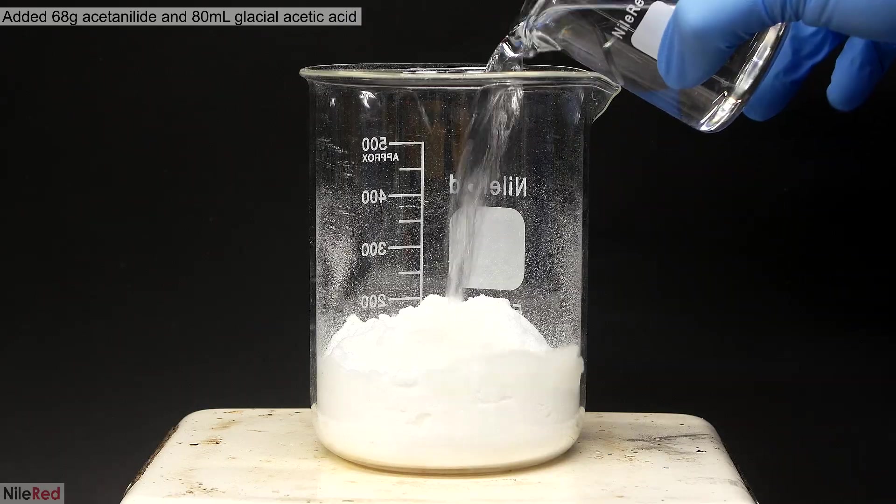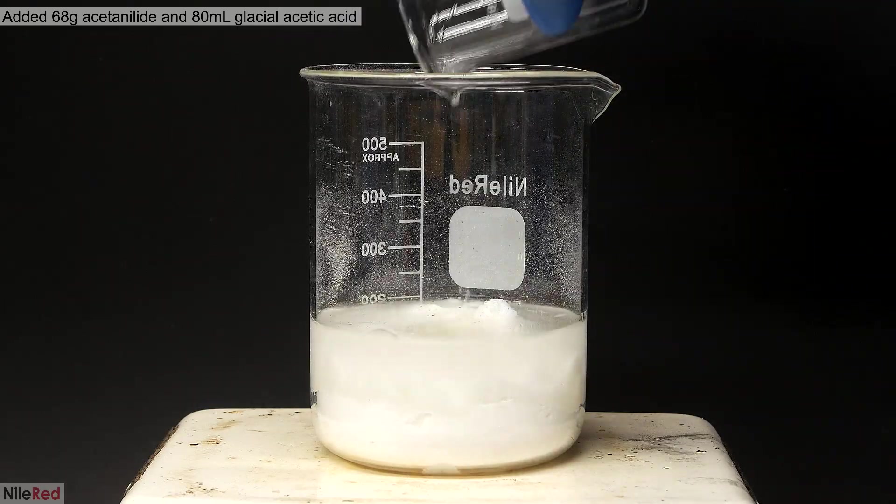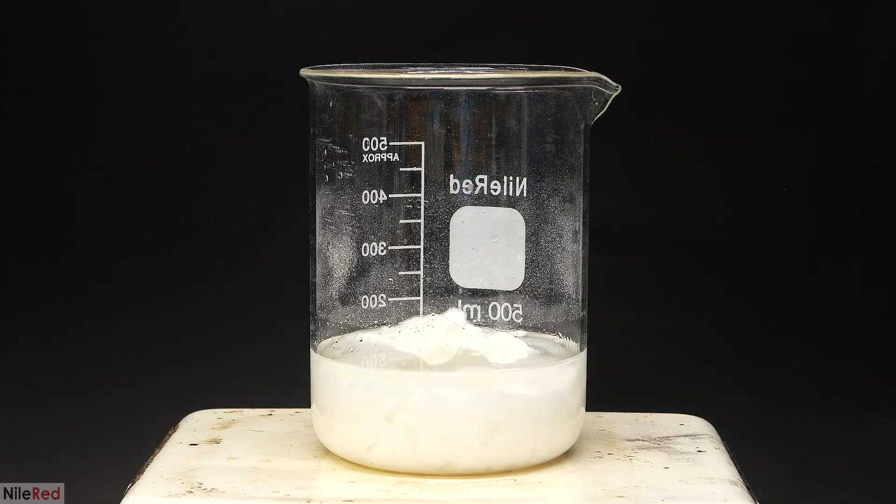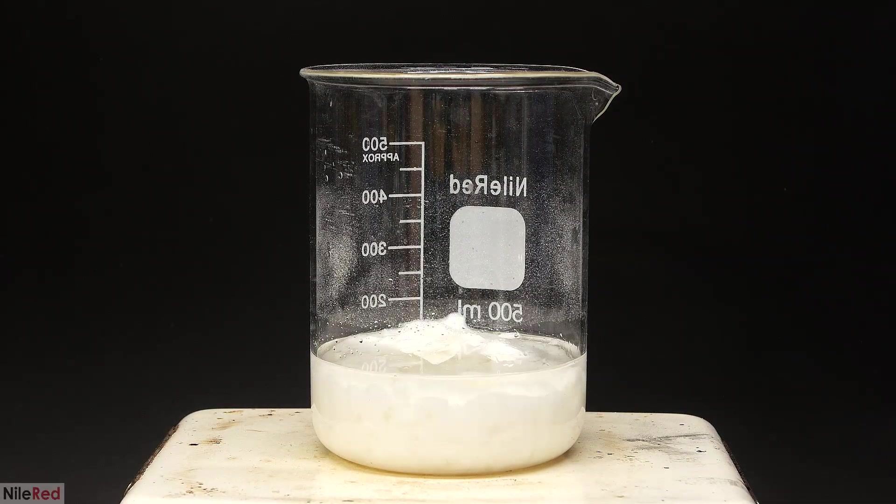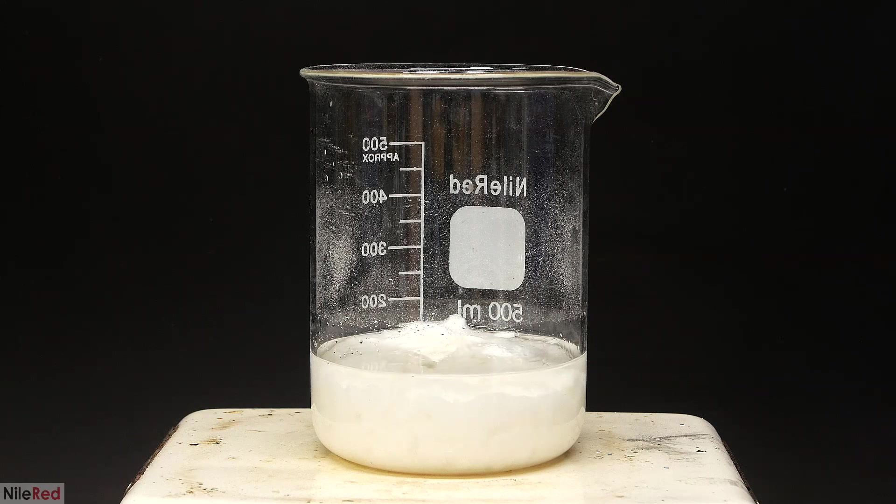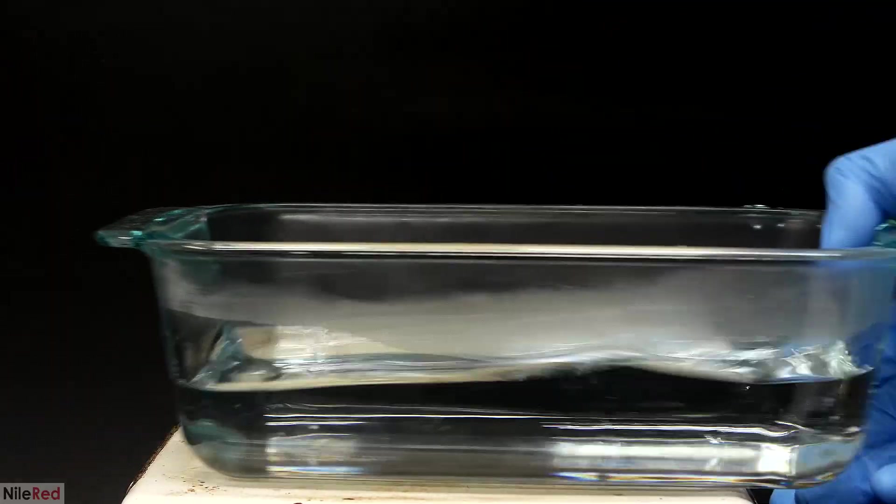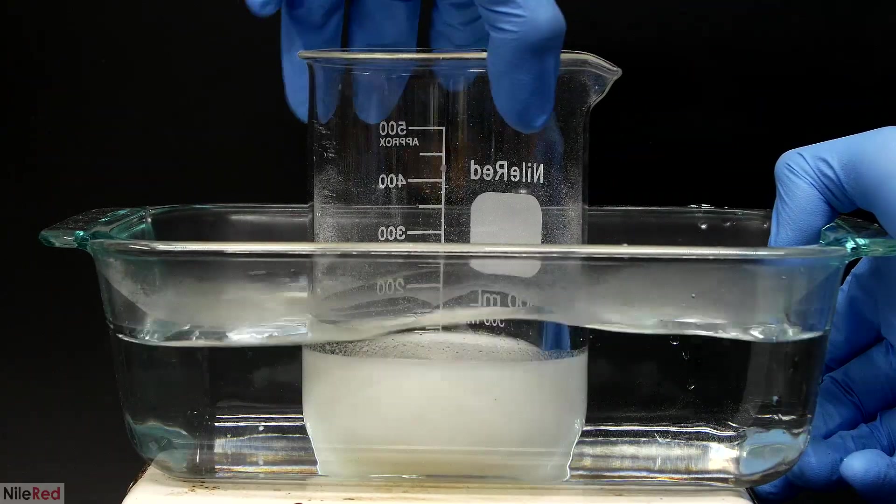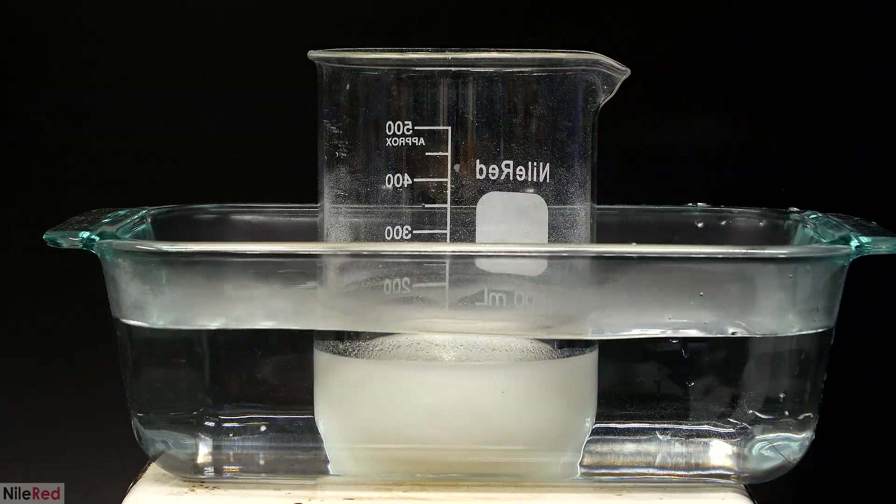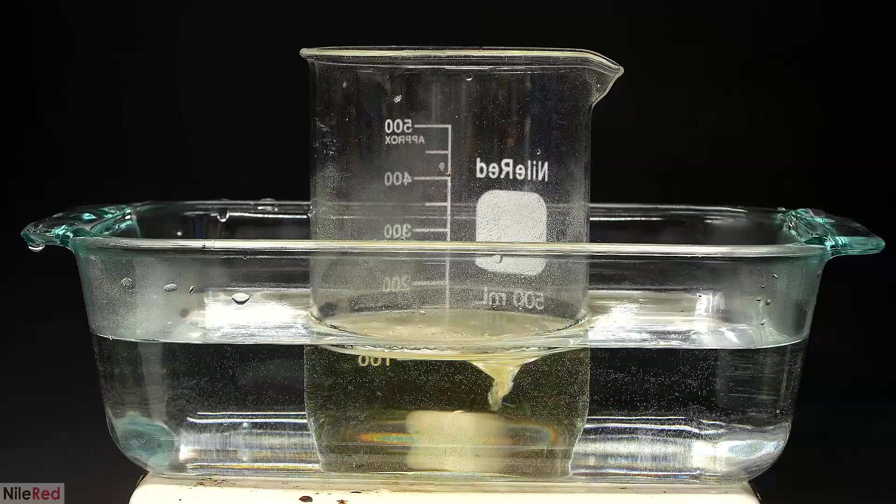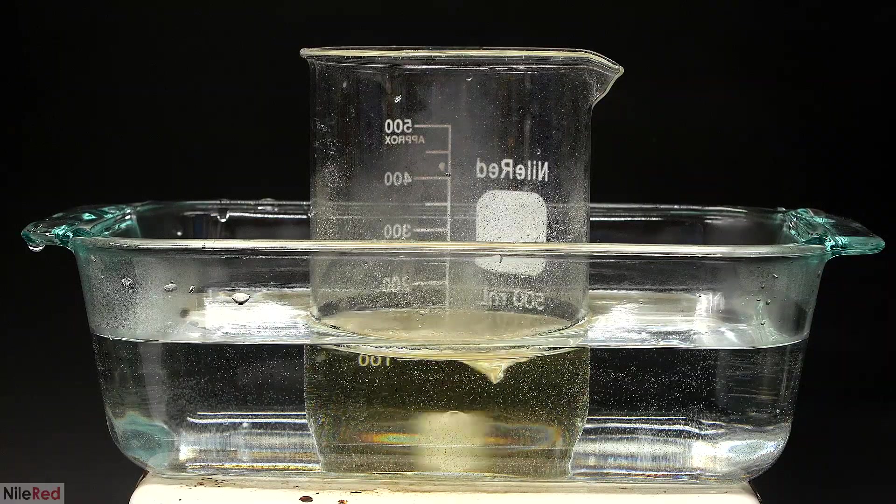To start things off, I dump the acetanilide into a beaker and I pour in some acetic acid. Then, on top of this, I drop in a magnetic stir bar. A small amount of the acetanilide dissolves, but most of it doesn't, so I'm gonna have to heat things up a little. I put everything into some hot water, I turn on the magnetic stirring, and I just wait. I had to replenish the hot water a couple times, but after 5 or 10 minutes, everything dissolves.